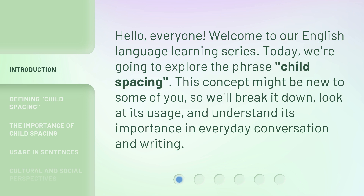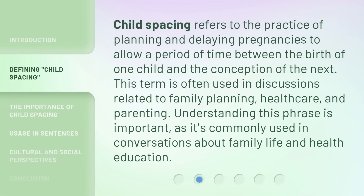This concept might be new to some of you, so we'll break it down, look at its usage, and understand its importance in everyday conversation and writing. Child spacing refers to the practice of planning and delaying pregnancies to allow a period of time between the birth of one child and the conception of the next.